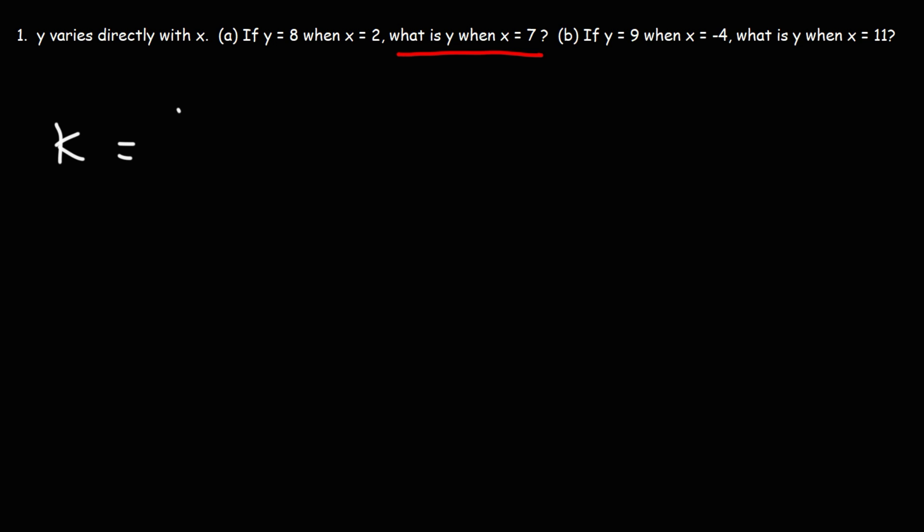So K is Y over X for direct variation. Y is 9, X is negative 4. So we can write K as negative 9 over 4. So now let's write the equation. Y equals KX. So the equation is Y equals negative 9 over 4 times X.